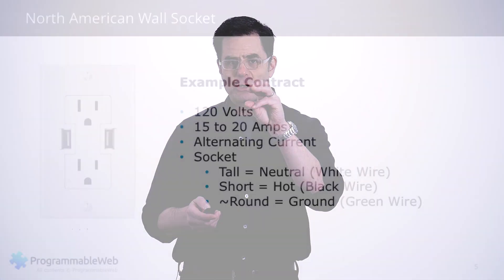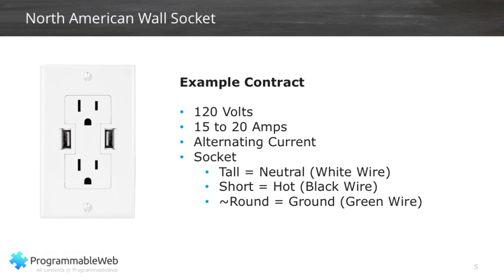We talked about consumers and providers in part one of this video series. The consumer, of course, is a device — it could be a computer, a hair dryer, or a television. The provider is your electric utility. The wall socket is the interface so that the two can work with each other. It's a very basic but exact technical understanding: you've got a specific arrangement of the receptacles — the tall receptacle is for neutral, the short one is for hot, the semi-ovular one is for ground. It delivers 120 volts of alternating current, and those different holes are a very specific distance apart from one another. There is a very clear contract here so that no matter what you have, you can plug it into the wall and it doesn't need to know what's providing electricity, just so long as that thing also adheres to this particular contract.